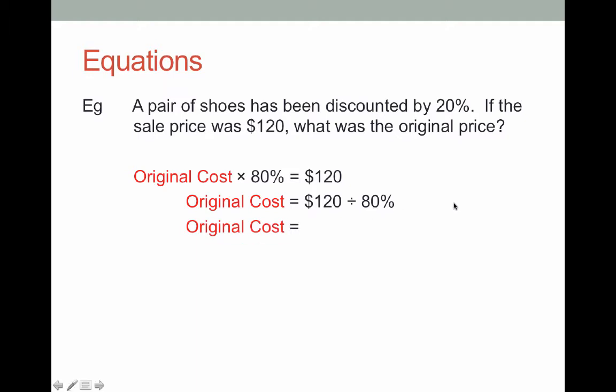Doing this on my calculator I get the original cost is $150. You should ask yourself if the answer makes sense. Does it make sense that the original cost was $150 and after I discounted it I got $120? It does make sense that when you start with a bigger amount and you discount it you get a smaller amount.